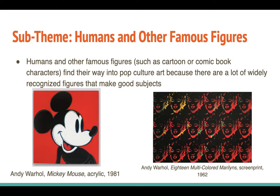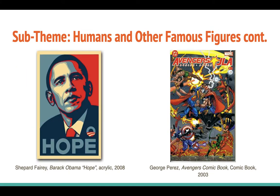Next, we have the sub-theme: Humans and Other Famous Figures. Humans and other famous figures, such as cartoon or comic book characters, find their way into pop culture art because there are a lot of widely recognized figures that make good subjects. For example, Andy Warhol's Mickey Mouse painting — Mickey Mouse is probably one of the most recognized characters in existence, so Warhol portrays popular culture by using him in his painting. Another piece by Warhol that uses a widely recognized figure is his stylized screen print of Marilyn Monroe. Here we have a painting turned into a popular poster done by Shepard Fairey. It was created during the 2008 presidential election and uses an image of Barack Obama to not only encourage voters to vote for him, but spread his message beyond the world of politics — with this, Obama entered into the art world as well. And lastly, here's another example of a comic book that encompasses popular culture by using a ton of famous figures that most people would recognize, with tons of opportunities for viewers to recognize at least one of them.